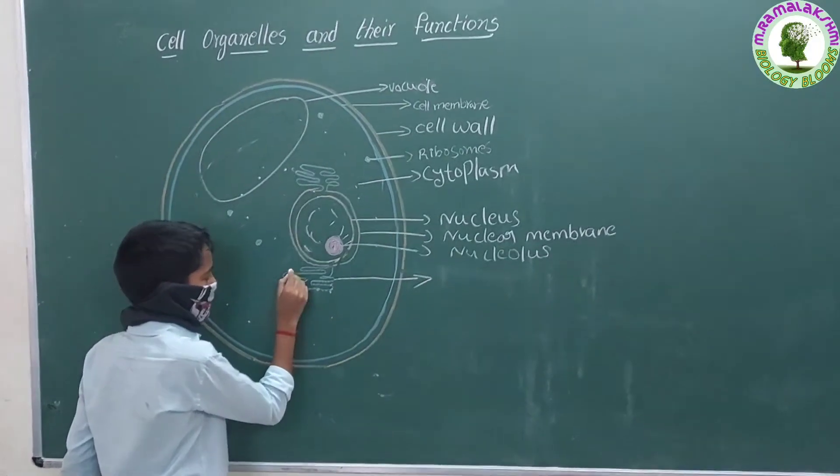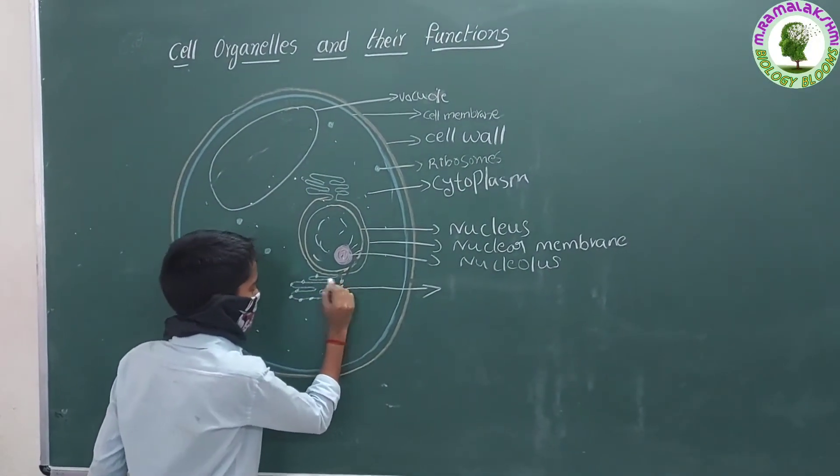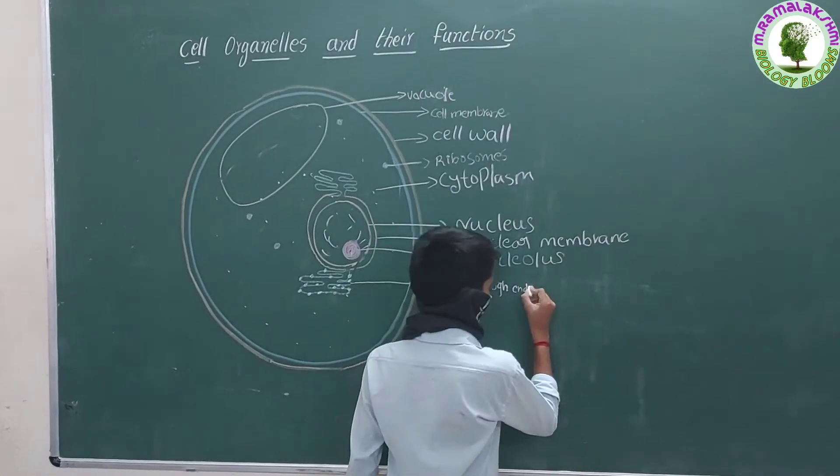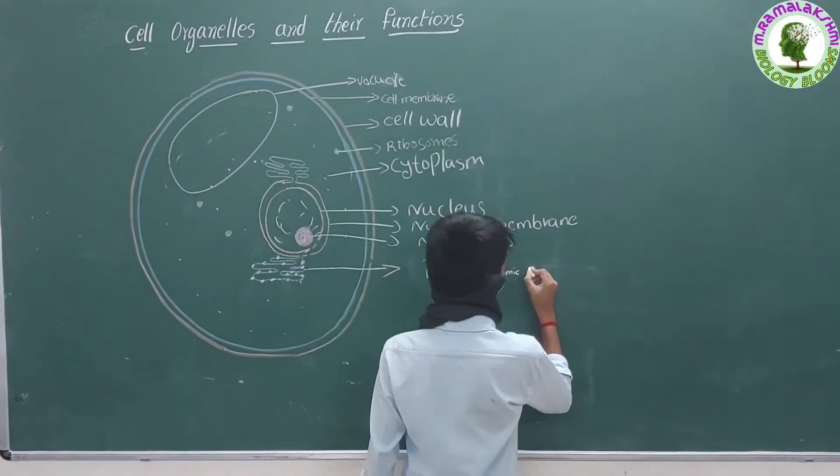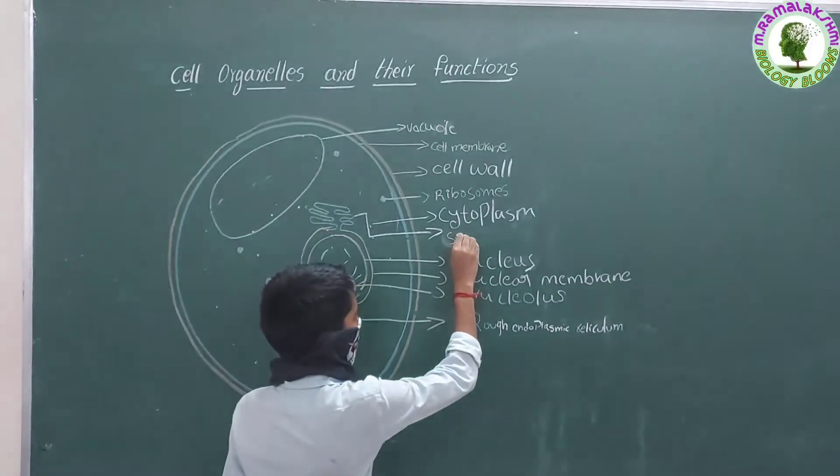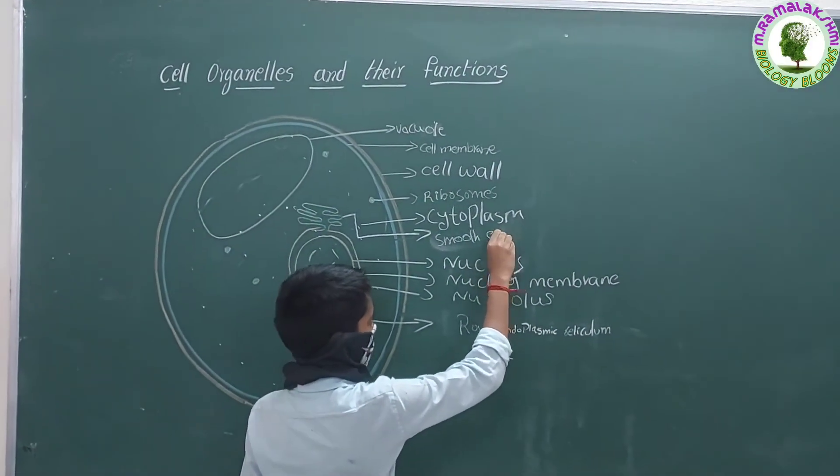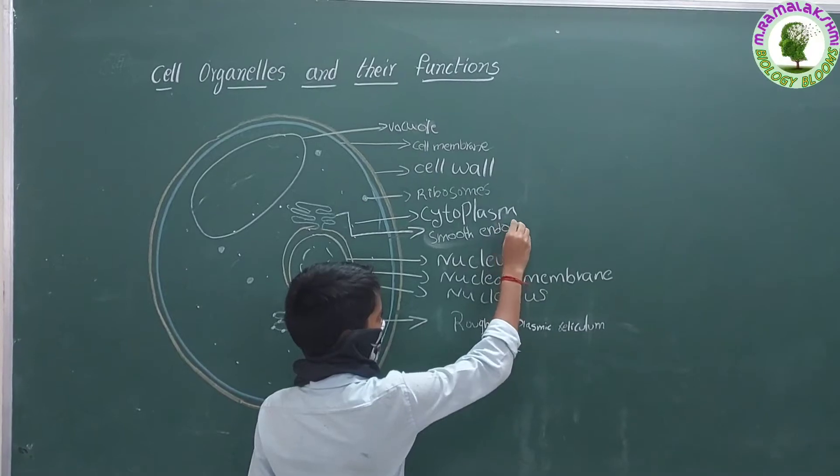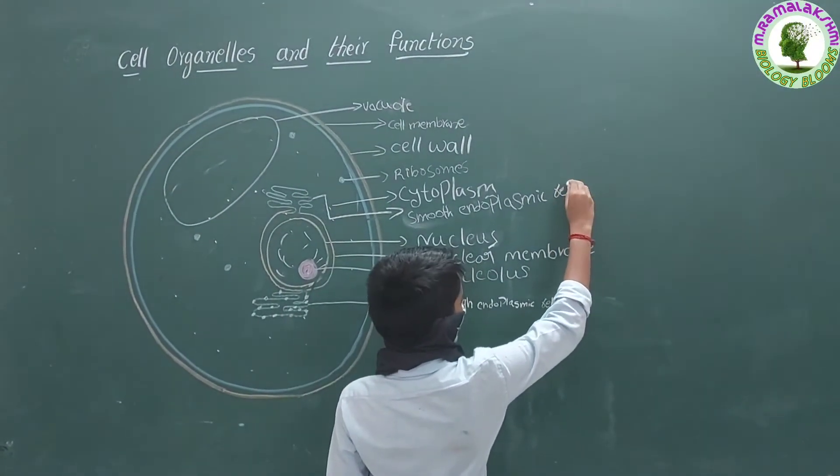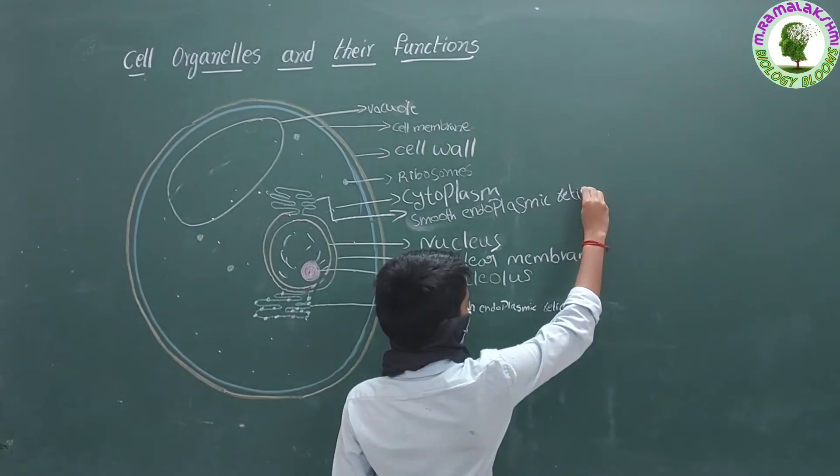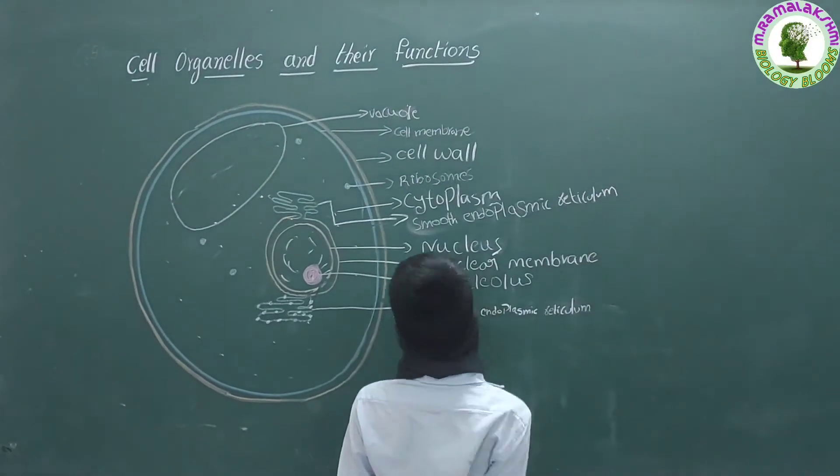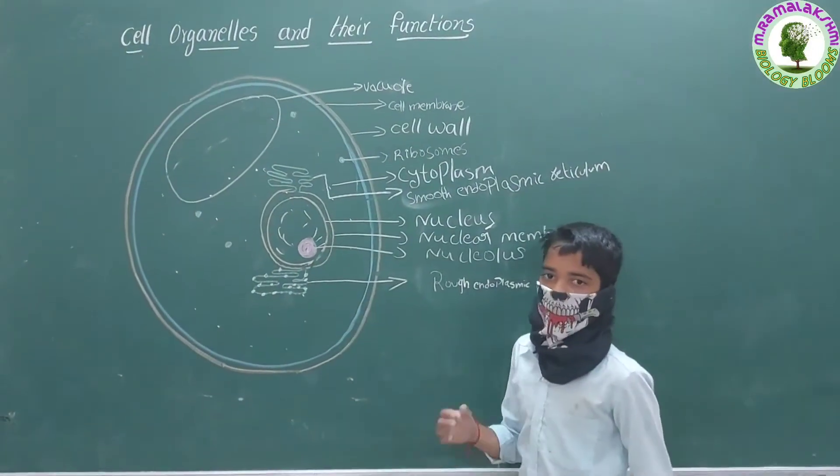If I have granule-like structures on my surface which are called ribosomes, then I am called rough endoplasmic reticulum, which helps in manufacture of fat molecules important for cell functions and breakdown of toxins.